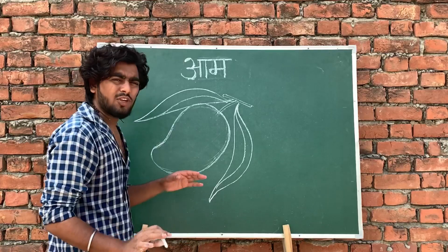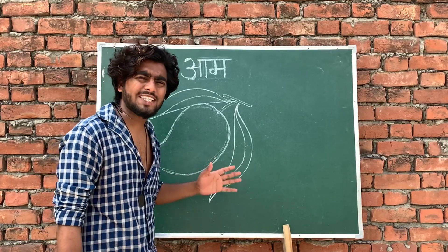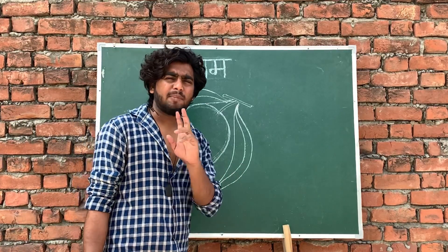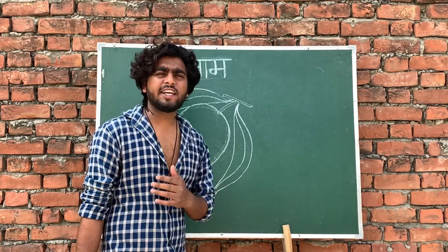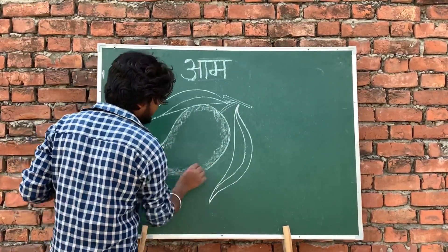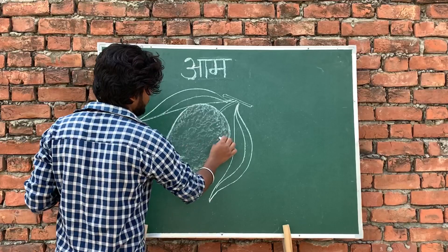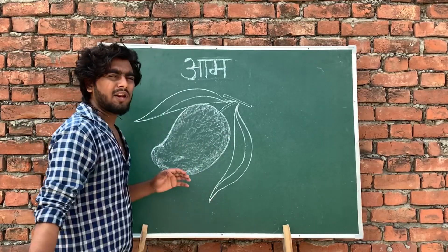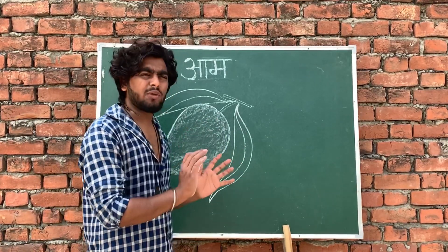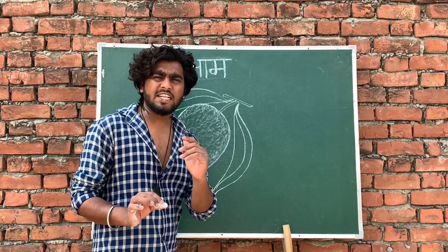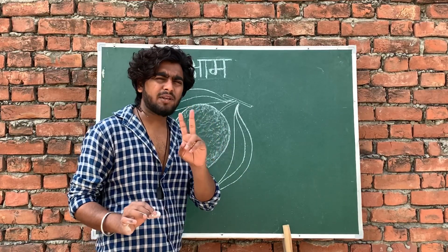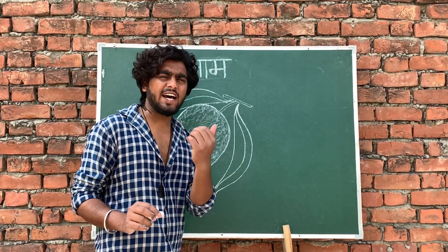Our quick sketch is complete. Now we are going to set the light and dark areas. We have put a full set of light pressure, and now we are going to set the dark areas.